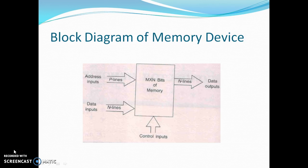The size of a memory chip is specified by two numbers M and N, as M into N bits. The number M specifies the number of locations available in the memory, and N is the number of bits in each location. The commonly used chip sizes are 64, 256, 512, 1024, 2048, 4096, etc.